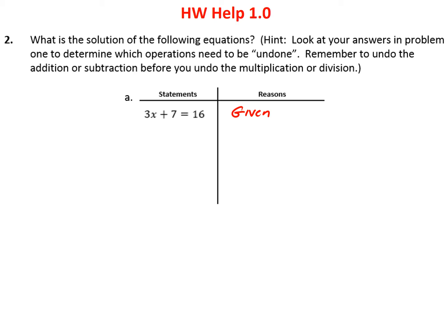Starting with the first equation, we need to look at the two operations that need to be undone. We saw the variable x, and there were two operations: first, multiplication — 3 times x — so we had to undo the multiplication. Then there's the plus 7. One of the things we discover is that while it's possible to undo either operation first, it's usually easier to undo them in the reverse PEMDAS order. PEMDAS says we would start by multiplying 3 times x, then add 7 — parentheses first, exponents second, then multiplication or division, and finally addition or subtraction.